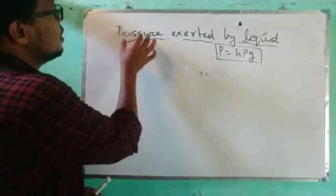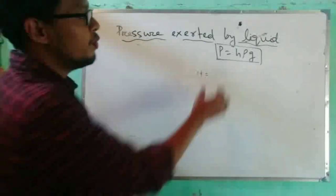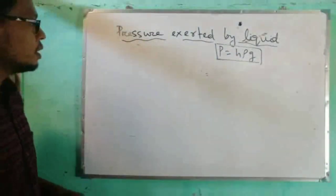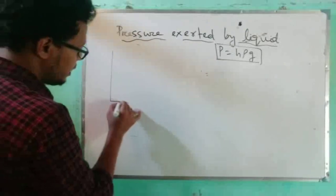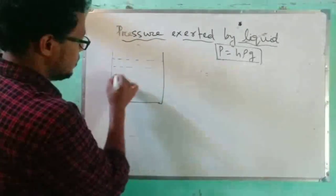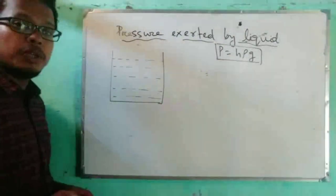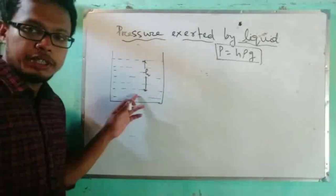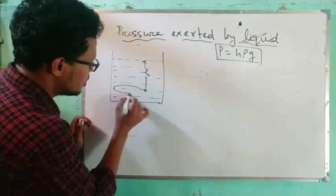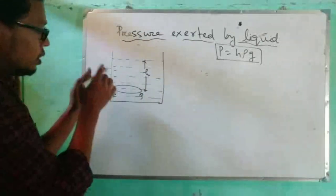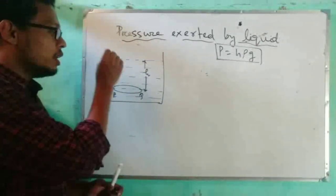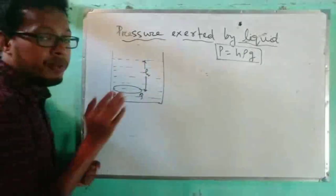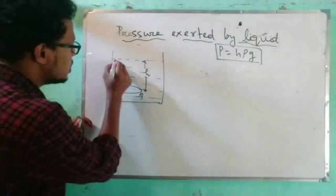Now I will prove the formula for pressure exerted by a liquid. Take a container filled with water. We want to find the pressure at a depth h. Consider one circular face PQ at that depth. The force exerted by the liquid on PQ is due to the water column placed above PQ. Consider an imaginary cylinder above PQ.